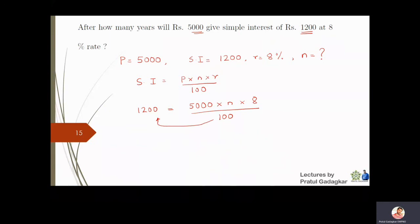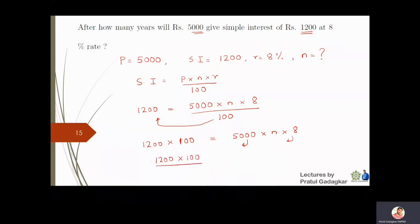Multiplying both sides by 100: 1200 × 100 = 5000 × n × 8. Solving for n: n = (1200 × 100) / (5000 × 8). Using the calculator, the number of years n = 3 years.